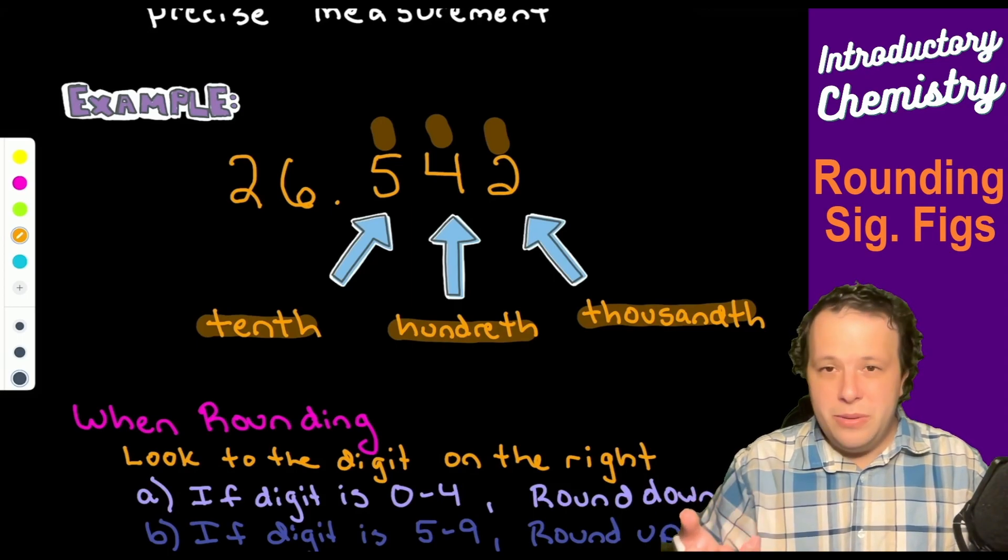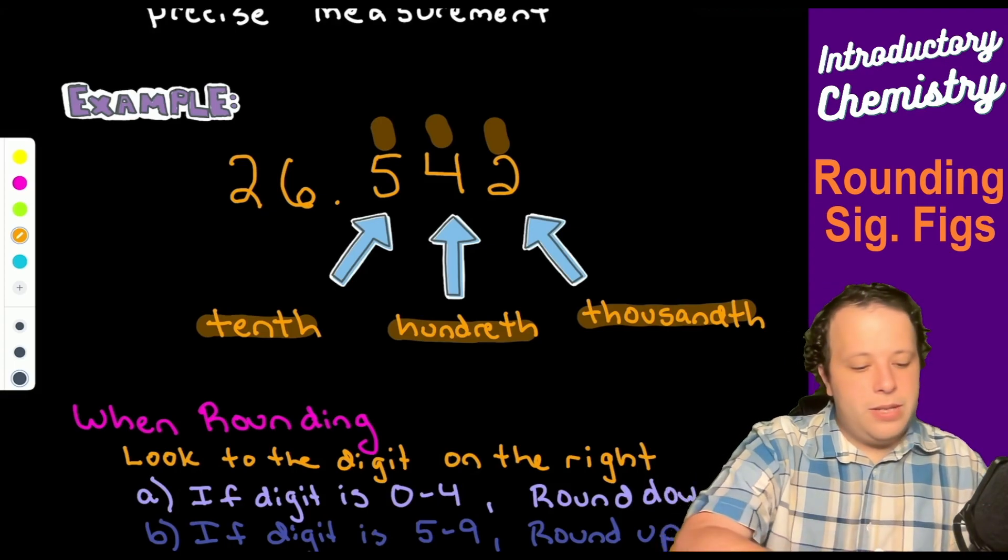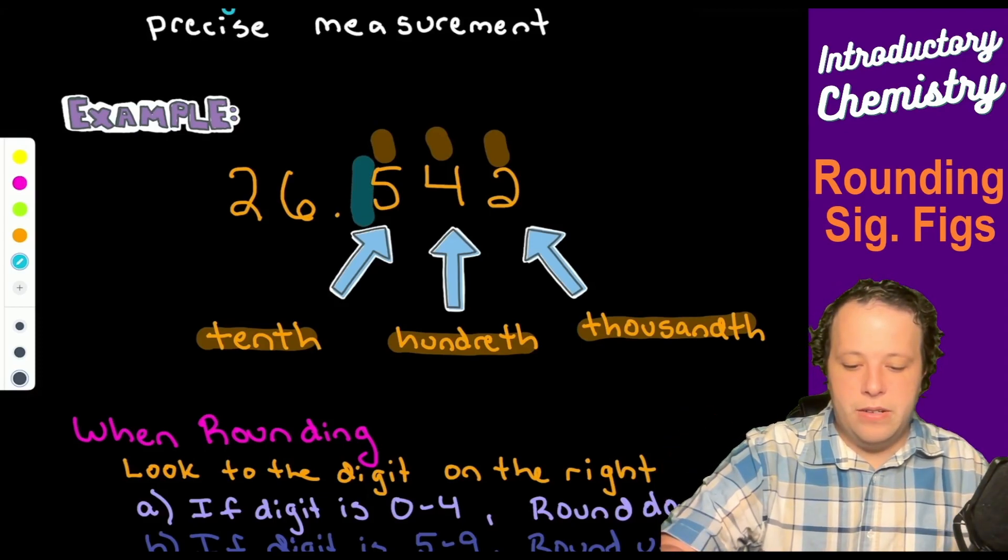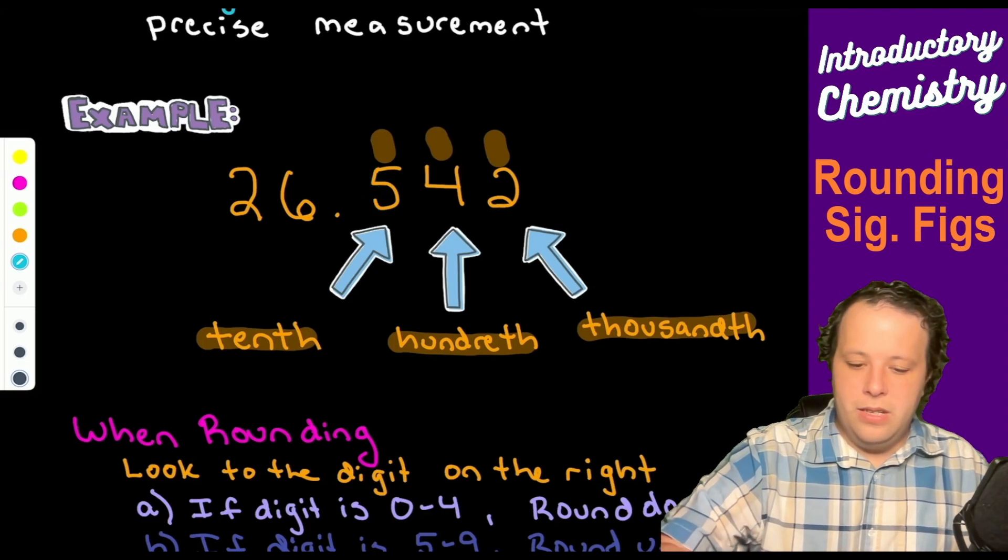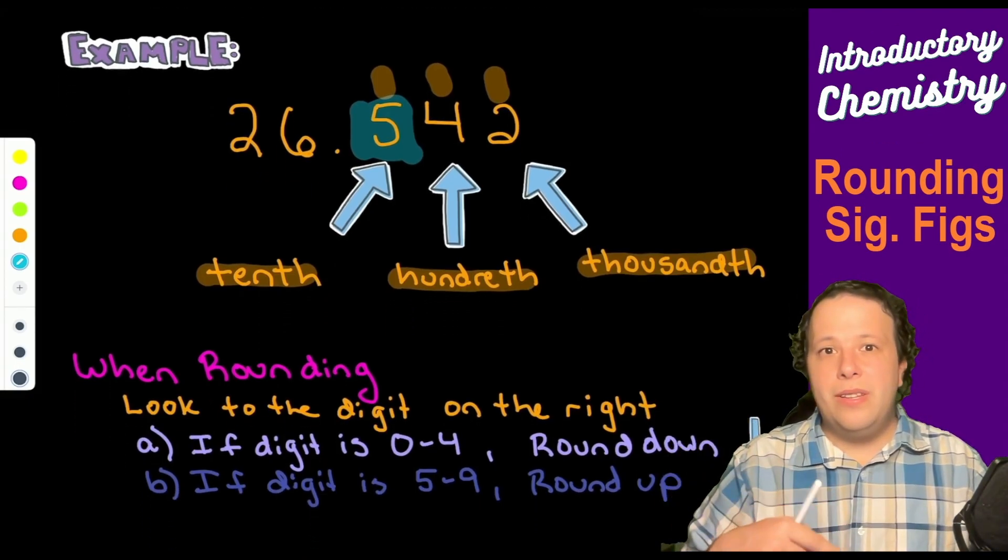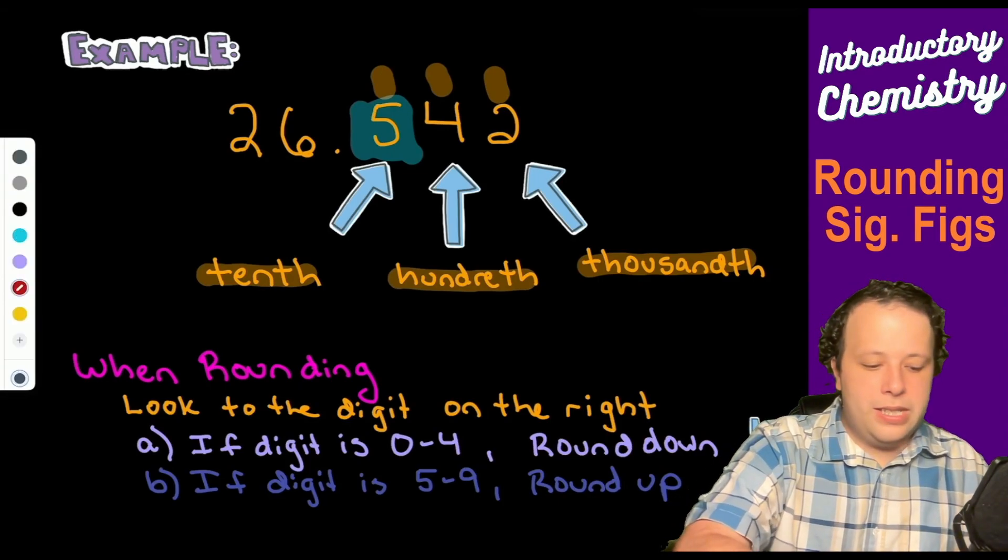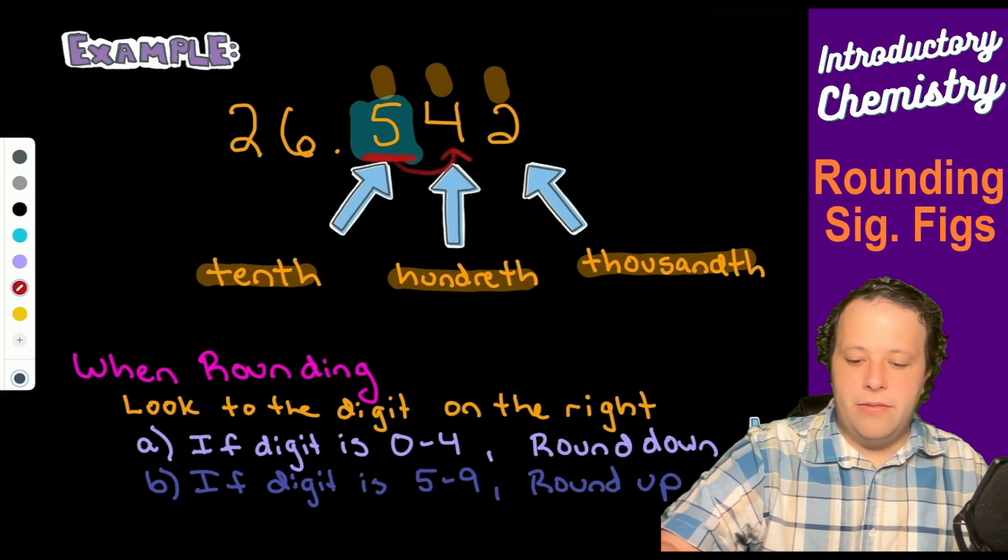When you're rounding, you always look to the digit on the right. So if I ask you to round to the tenth position here, you look to the digit on the right. We want to stick a big underline right under the five, and then we're going to be looking at the four value next door.